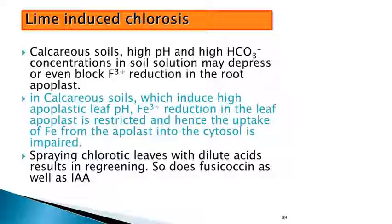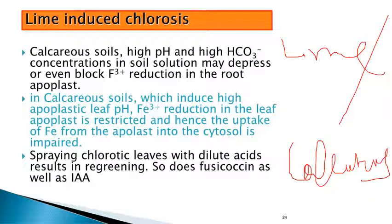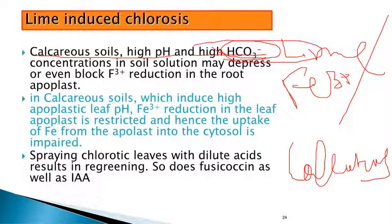Lime Induced Chlorosis में क्या होता है? अगर आप lime ज्यादा देंगे, या calcareous soil है — calcareous soil में lime ज्यादा होता है, basic factor ज्यादा होता है. So high pH हो जाता है, high HCO₃⁻ (bicarbonate ion) हो जाता है, यह Fe³⁺ को block कर देता है. HCO₃⁻ ion अगर ज्यादा होता है तो Fe³⁺ को block कर देता है, यह plant में नहीं आ सकता. So iron deficiency हो जाता है — actually iron की कमी नहीं है मिट्टी में, पर यह automatically हो जाता है. यह याद रखेंगे.